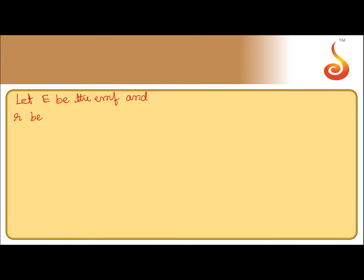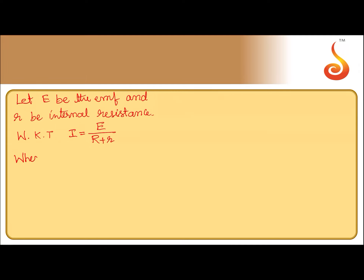Let r be the internal resistance of the battery. We know that current drawn from the battery i is equal to e divided by (R + r), where capital R is external resistance and small r is internal resistance. When 20 ohm is connected across the battery, capital R is 20 ohm and the given current is 0.5 ampere.